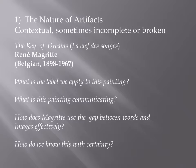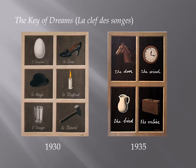We're going to look at a couple of paintings. They go by the same title — The Key of Dreams, La Clé de Sangre by René Magritte, who was a Belgian artist born in 1898 and died in 1967. As we look at these paintings, we should be thinking: what's the label we can apply to this painting? What is this painting communicating? How does Magritte use the gap between words and images effectively? And how do we know all of this for certain? Sometimes artifacts are complete, sometimes they are broken or incomplete. We have two images — one created in 1930 and one created five years later, 1935.